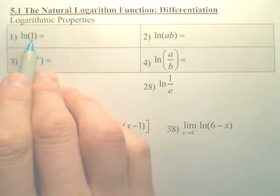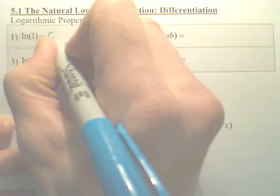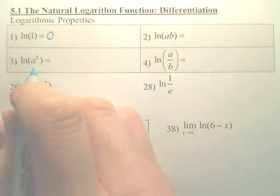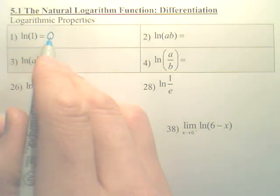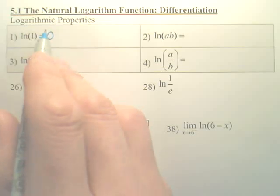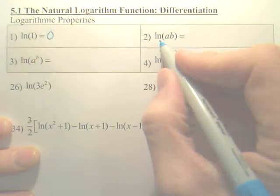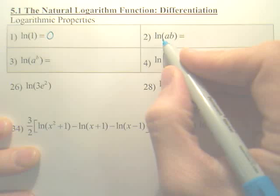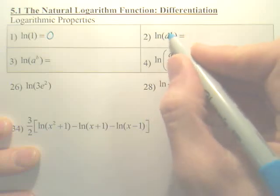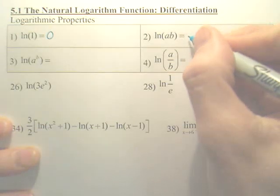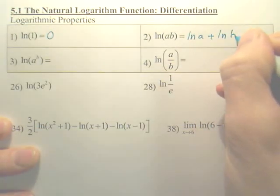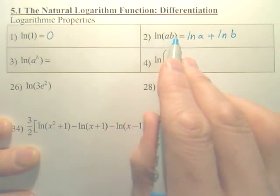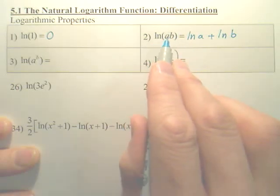ln 1 is always going to be zero, just something you have to memorize. I'll show you later on how to get that, but that's always zero for the first property. Second property: if you're taking a natural log of something and you have two pieces multiplied, you can expand them. When you take a log with what's inside, if it's two things multiplied, you can expand it and make two logs or natural logs and add them.